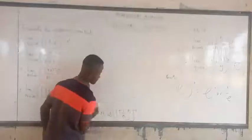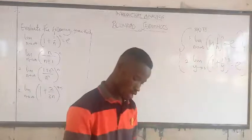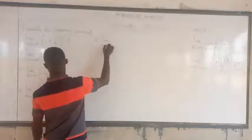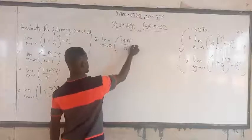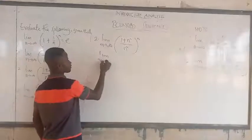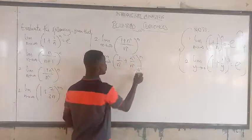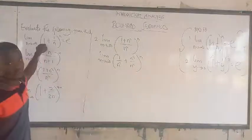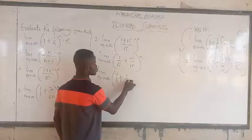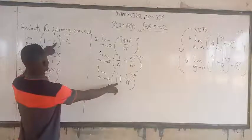Let's move to the second one. For the inside, we divide by n squared: we get 1 over n squared plus n squared over n squared. Taking the limit as n approaches infinity, this simplifies so we get 1 plus 1 over n squared.